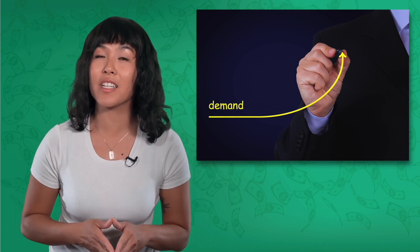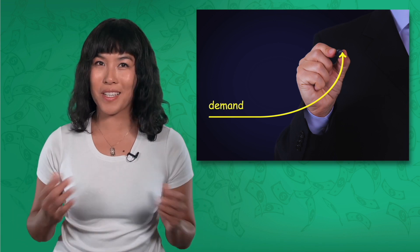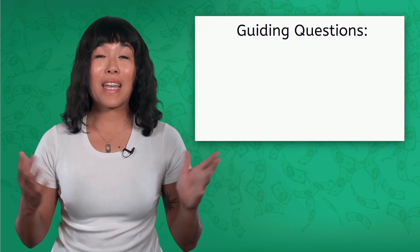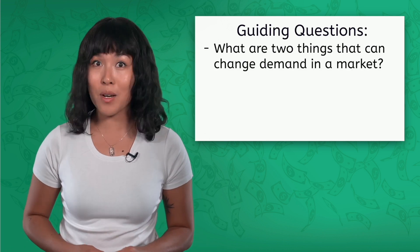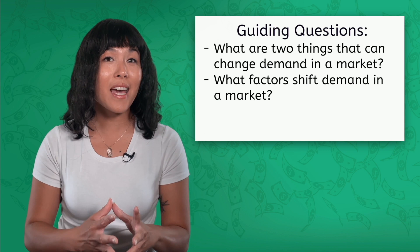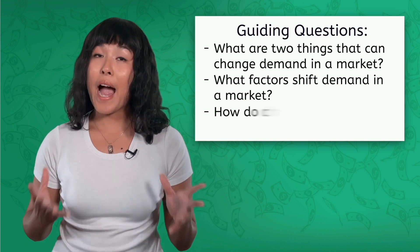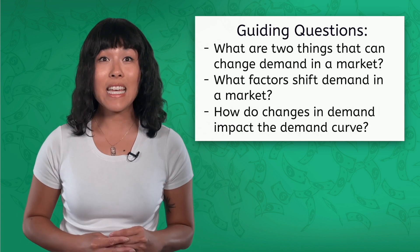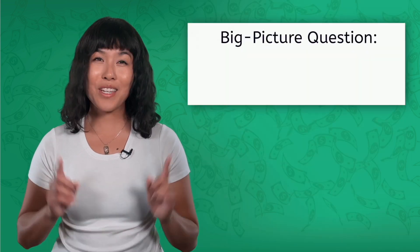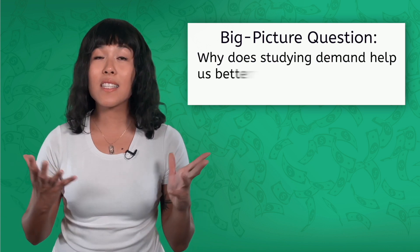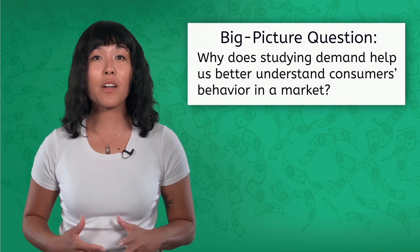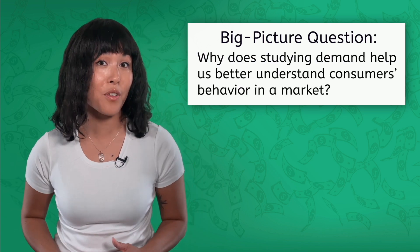Hey there. In today's lesson, we are going to take a deeper look into demand in a market economy. By the end of the lesson, you should be able to answer the following: What are two things that can change demand in a market? What factors shift demand in a market? How do changes in demand impact the demand curve? And you should start thinking about our big picture question: Why does studying demand help us better understand consumers' behavior in a market?